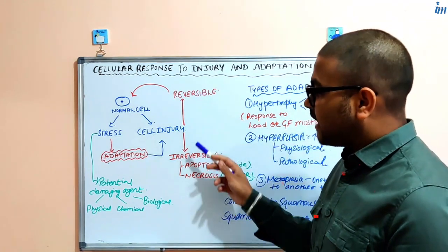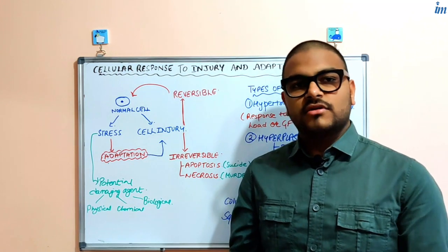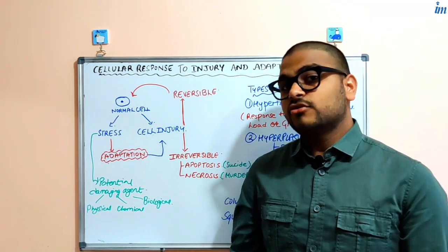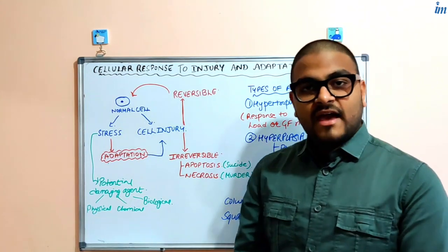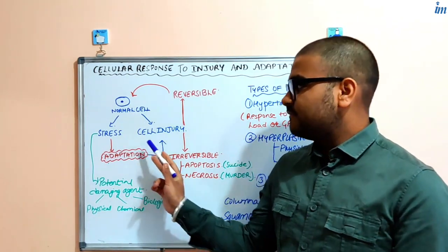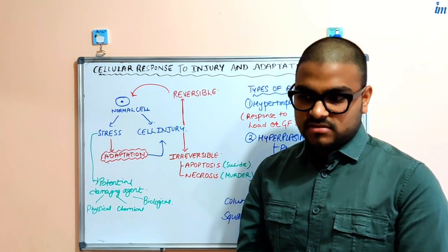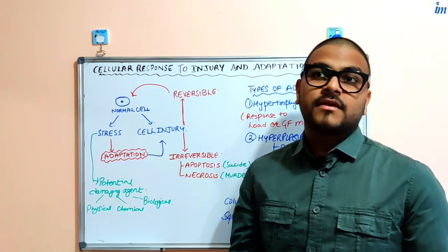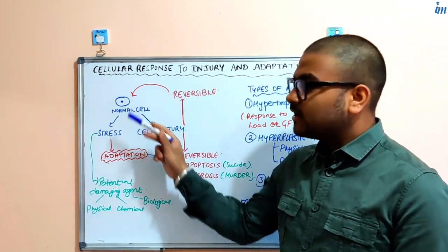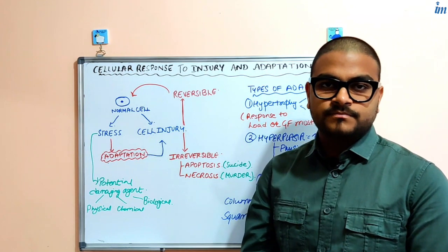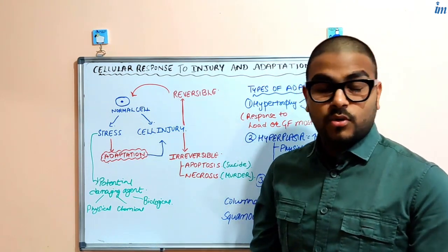Reversible and irreversible injury will have different morphological features and you will be able to identify them. The good thing is that if the injury is reversible, it means that after you have removed the injurious stimuli, the cell can again become a normal cell. But in case the injury is irreversible, the cell will never be able to become normal.